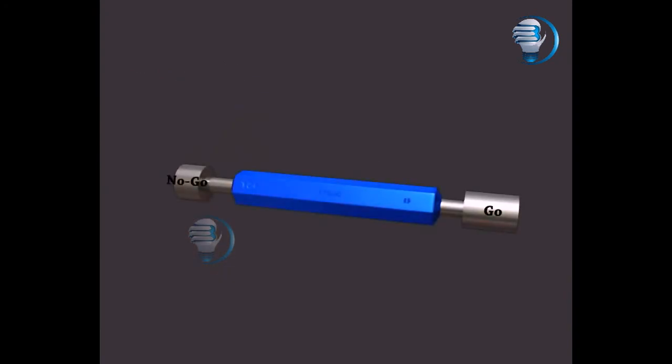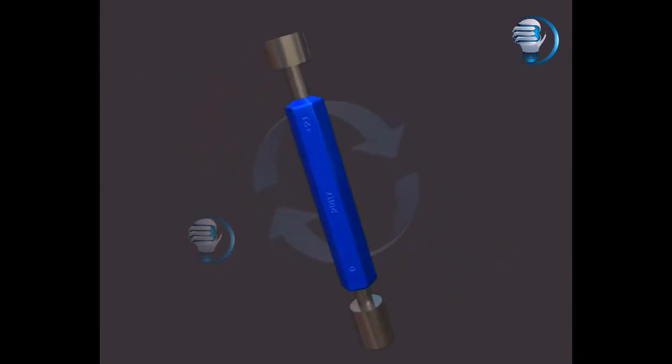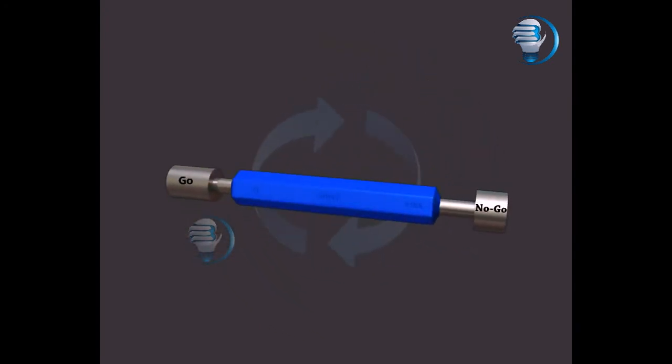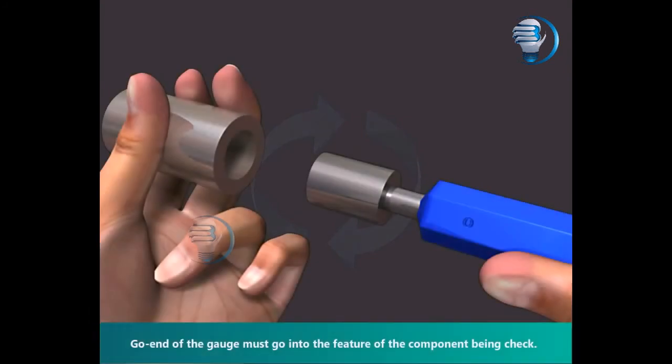No-go. Go. Go. No-go. Go end of the gauge must go into the feature of the components being checked.